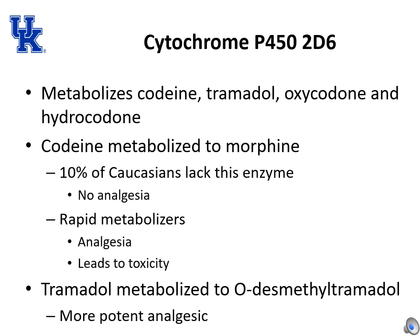Cytochrome P450 2D6 is the hepatic enzyme responsible for metabolizing codeine, tramadol, oxycodone, and hydrocodone. Codeine is metabolized to morphine; 10% of Caucasians lack this enzyme and will have no analgesia from codeine. On the other hand, rapid metabolizers convert codeine to morphine very quickly, producing analgesia but potentially leading to toxicity. Tramadol is metabolized to O-desmethyltramadol, a more potent analgesic than tramadol itself. This concludes the opioid pharmacology lecture.